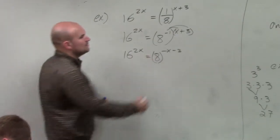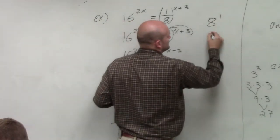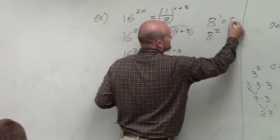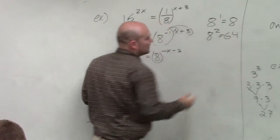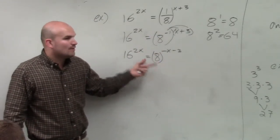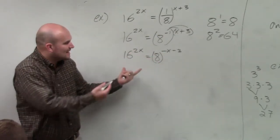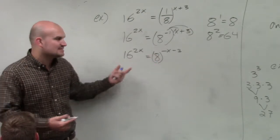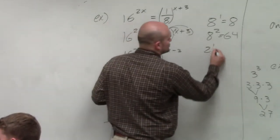And 8, if you go through 8, 8 to the first, 8 squared. Well, 8 to the first is 8, and 8 squared is 64. So there's no way I can rewrite 16 as a base 8. So therefore, I look at, well, what else can I rewrite that I can raise to a power to give me 8 and 16? And that answer is 2.